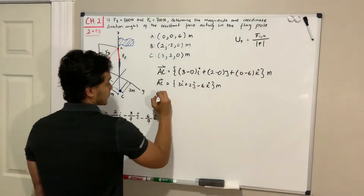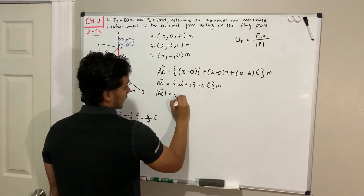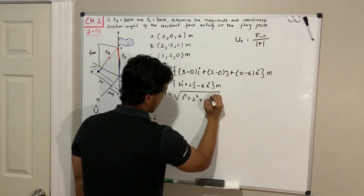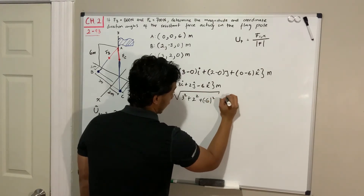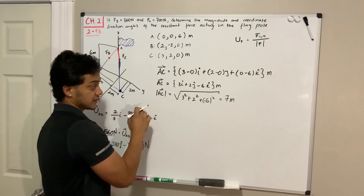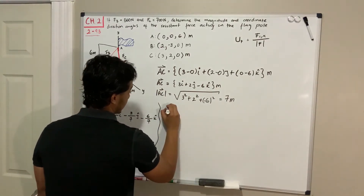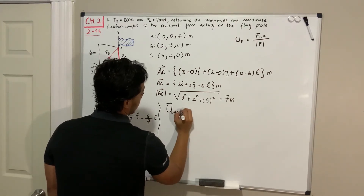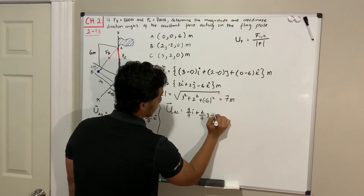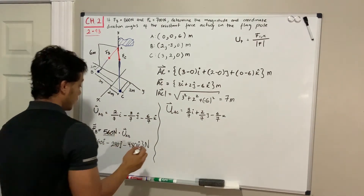To find the unit vector of AC we need its magnitude. Applying the Pythagorean theorem: the square root of 3 squared plus 2 squared plus negative 6 squared also gives 7 meters — the same as AB, though that's just a coincidence in this problem. The unit vector AC is therefore 3/7 in i, plus 2/7 in j, minus 6/7 in k.